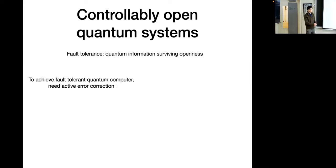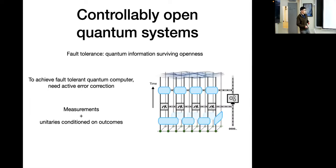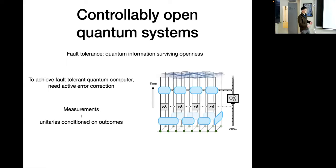The approach for fault tolerance is usually active error correction. In active error correction, you basically carry out measurements to have a best guess of where the errors occurred. Then, based on the measurement outcomes, you apply some feedback — some corrective unitaries to correct those errors. This is the basic spirit of active error correction: you apply measurements, get some knowledge of the errors, and then apply feedback based on the measurement outcomes to correct them.